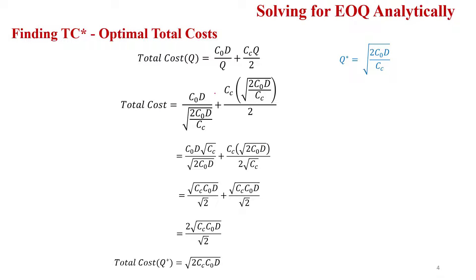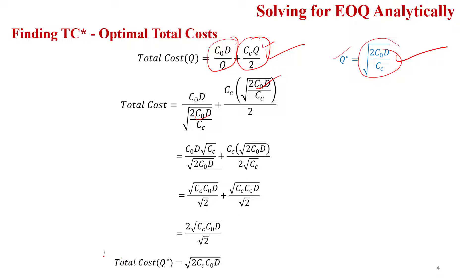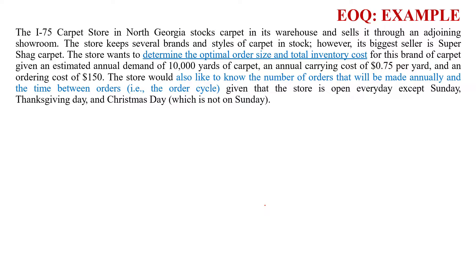Substituting Q* into the total cost function — replacing Q in both the ordering cost and carrying cost terms — and simplifying gives the optimum total cost: TC* = √(2·C_C·C_O·D). Notably, there is no Q in this expression, so based only on carrying cost, ordering cost, and demand, we can find the minimum total cost.